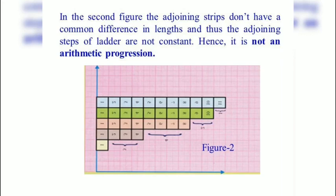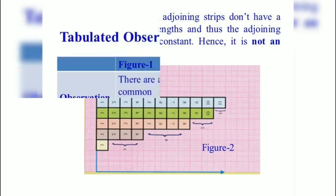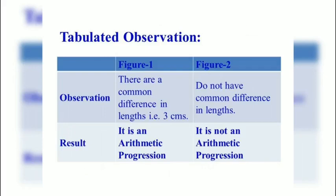Tabulated observations: for figure 1 there is a common difference in length that is 3 cm, and for figure 2 there is no common difference in length. So result: for figure 1 it is an arithmetic progression and for figure 2 it is not an arithmetic progression.